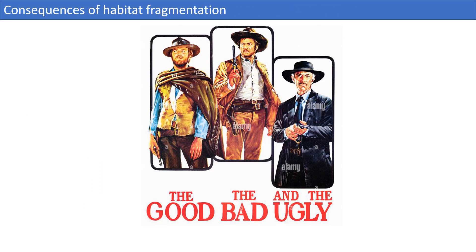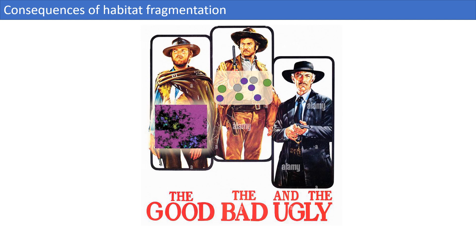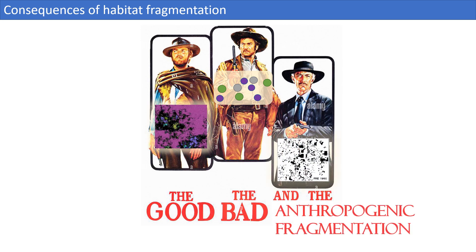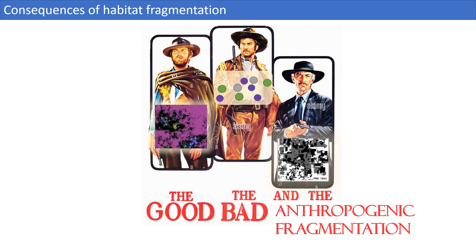This video will talk about the consequences of habitat fragmentation. I will talk about the good and the bad of naturally occurring fragmentation. Bear in mind that these definitions are somewhat arbitrary, and what might be perceived as a positive effect on a certain scale or for one species can have a negative effect on different scales for other species. I will also talk about a more recent type of habitat fragmentation due to human activities, and how its consequences differ compared to naturally fragmented habitats.